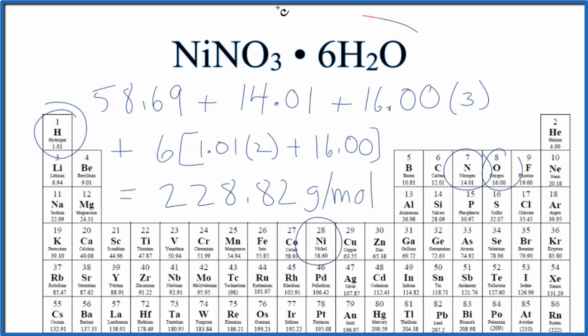What that means is if we have one mole of this nickel to nitrate hexahydrate, it's going to weigh 228.82 grams.